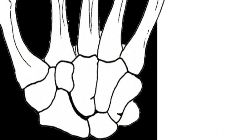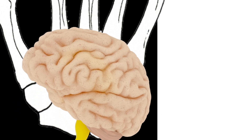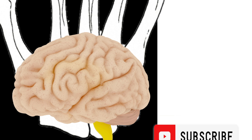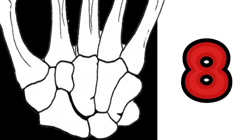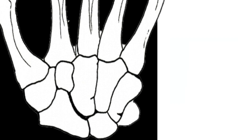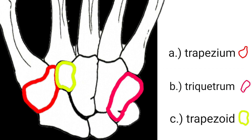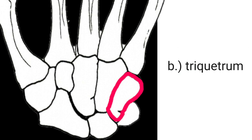Question number four: how many carpal bones are there? Eight carpal bones — you got it. Question number five: out of the eight carpal bones, there were three that started with the letter T. Out of those three, which one is the third bone in the mnemonic? Triquitrum — you got it. Remember, 'tri' is three.